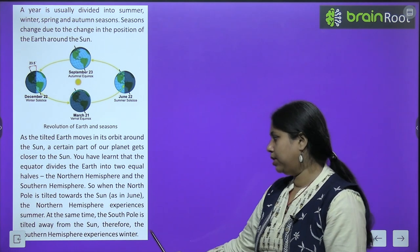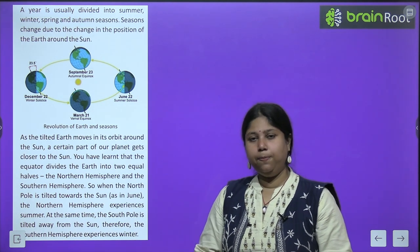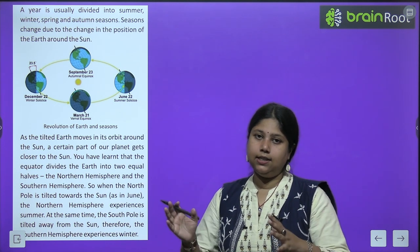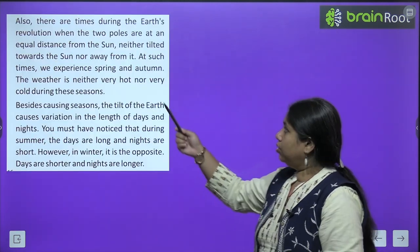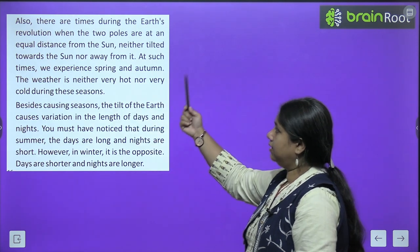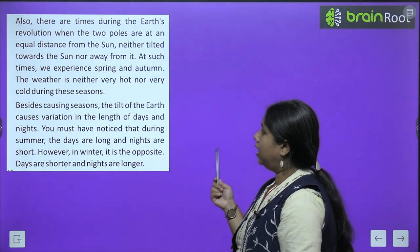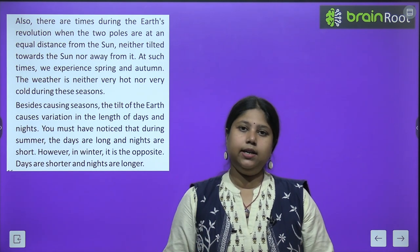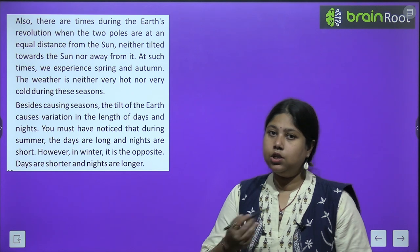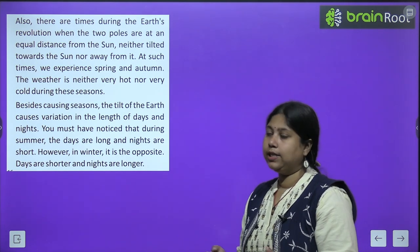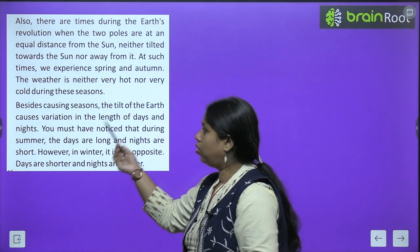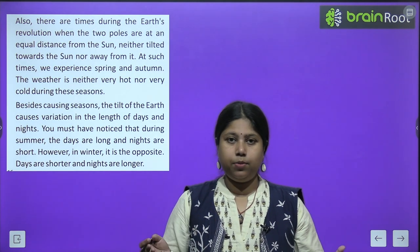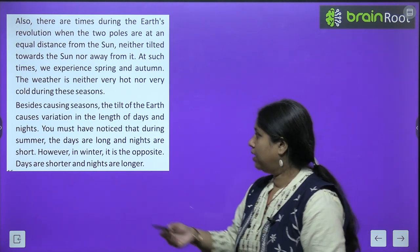At the same time, the south pole is tilted away from the sun, therefore the southern hemisphere experiences winter. Also, there are times during the earth's revolution when the two poles are at equal distance from the sun, neither tilted towards it nor away. At such times we experience spring and autumn — yaani patjhad ka mahina aur basant ritu. The weather is neither hot nor very cold during these seasons — in dono seasons mein weather na to bahut zyada garmi hoti hai aur na hi bahut zyada sardi — moderate temperature rehta hai aur kaafi pleasant weather hota hai.